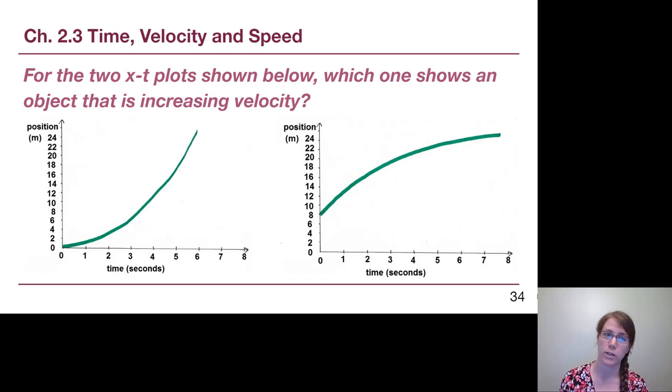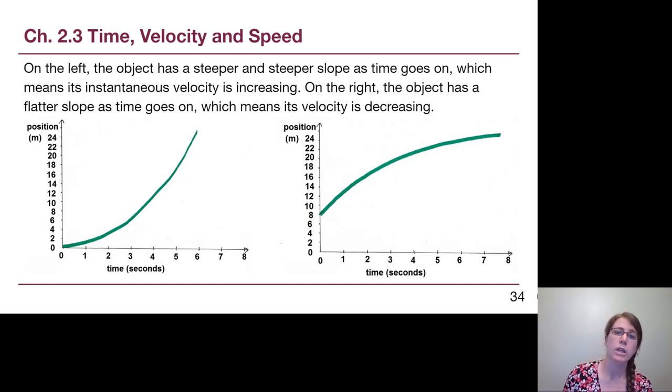Another question for us. For the two position time plots shown below, which one shows an object that is increasing velocity? Pause the video so that you can think through it and try to describe either out loud or in written sentences why you chose the graph that you did. On the left, if we look at how the slope changes, it was a small number slope, shallow, and it ends up being a steeper slope, bigger number slope, which means that on the left, this object, its instantaneous velocity was small, now it is big, and so it is speeding up, it's increasing its velocity.